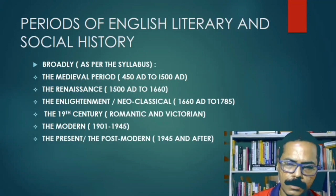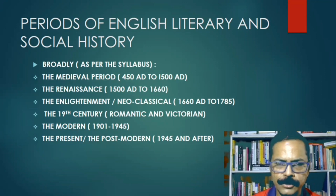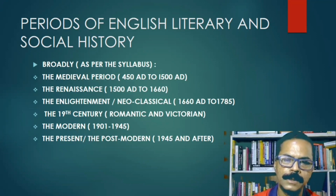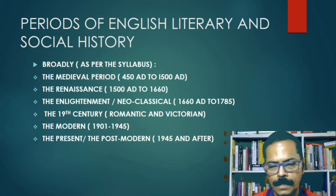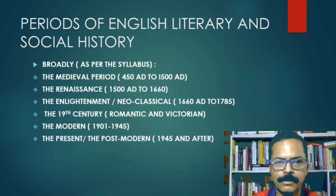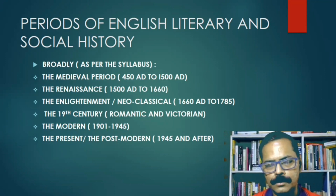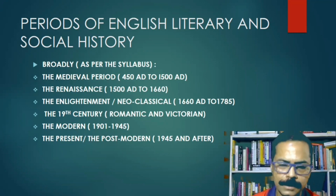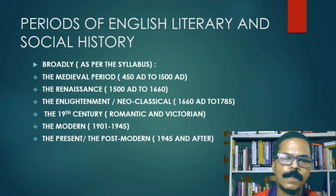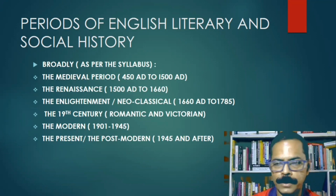This English literary and social history covers a long span of time from the 5th century to the present. Scholars have divided this long span of time into certain smaller periods. These periods, broadly in sync with your syllabus, are: first, the medieval period, which starts in 450 and ends in 1500.